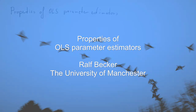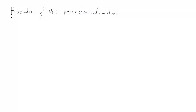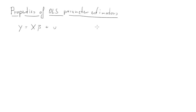In this clip I'm going to talk about the properties of OLS estimators. Let's first write down our well-known regression model: y equals x beta plus u, where u is a vector of random variables. That's important, and later we'll make assumptions on that random variable.